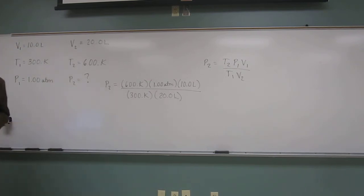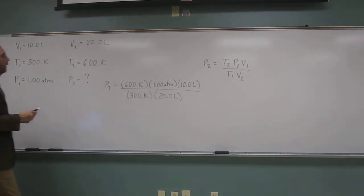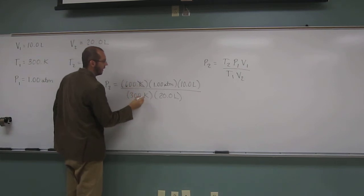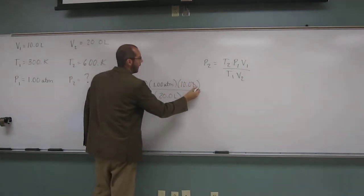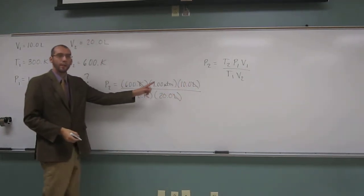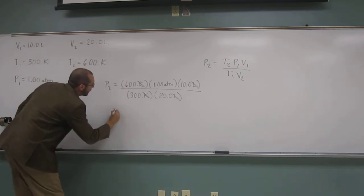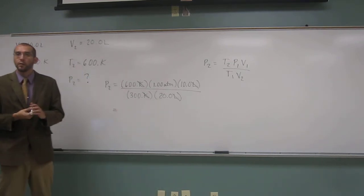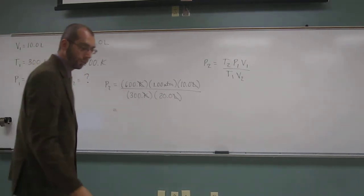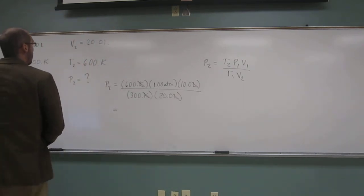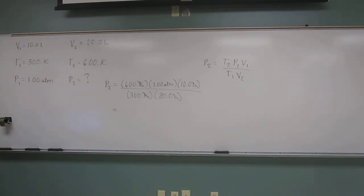Okay. So hopefully you guys can see. We can cancel Kelvins. We can cancel liters, and we're left with atm. Atm's are good pressure units. So 600 times 10 divided by 300 divided by 20.